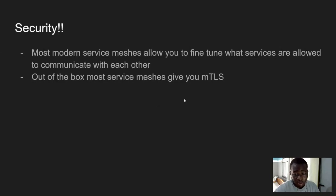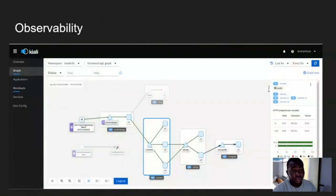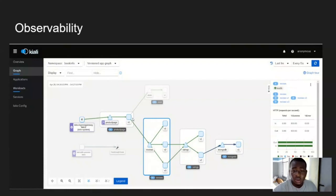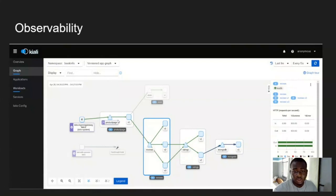Another big security feature is mutual TLS, which encrypts the communication between services and gives you yet another layer of security. Most service meshes also provide observability features — cool dashboards — which allow you to drill into each service running in your cluster. You can see things like latency and failed requests. The screenshot here is from Istio's Kiali dashboard, where you can see what services are talking to each other and how they are communicating.